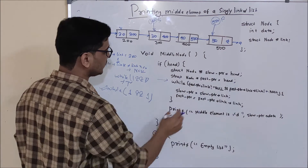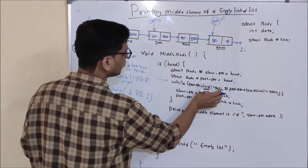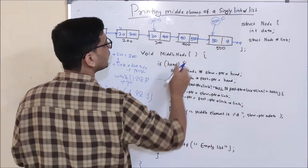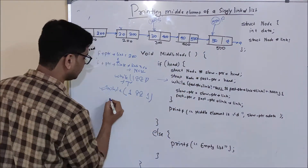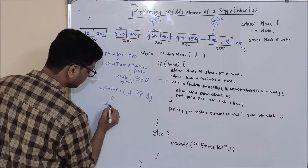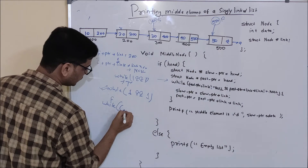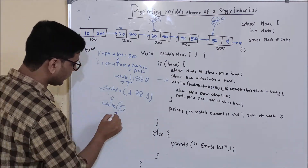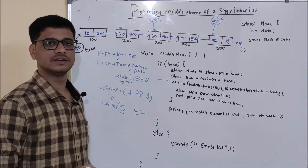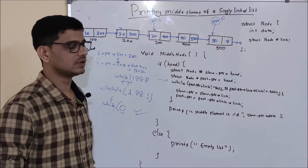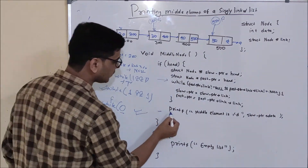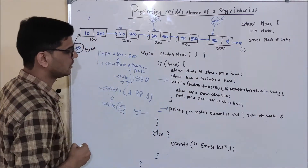After the second iteration, it checks again whether fast pointer dot link is null. As you can see, fast pointer dot link is now null, so this condition is false. Since the first condition is false, it won't even check the second condition, and the while loop exits. We then print the slow pointer's data, which gives us the middle element.